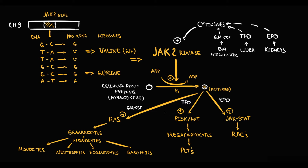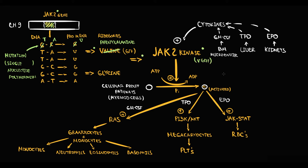But if a mutation causes substitution of valine for phenylalanine at position 617 of JAK2 kinase, now JAK2 kinase becomes constantly activated. So this regulation by cytokines is gone. And this mutation causes disproportional activation of intracellular pathways, resulting in a mild increase in granulocytes and monocytes, moderate increase in platelets, and severe increase in red blood cells.